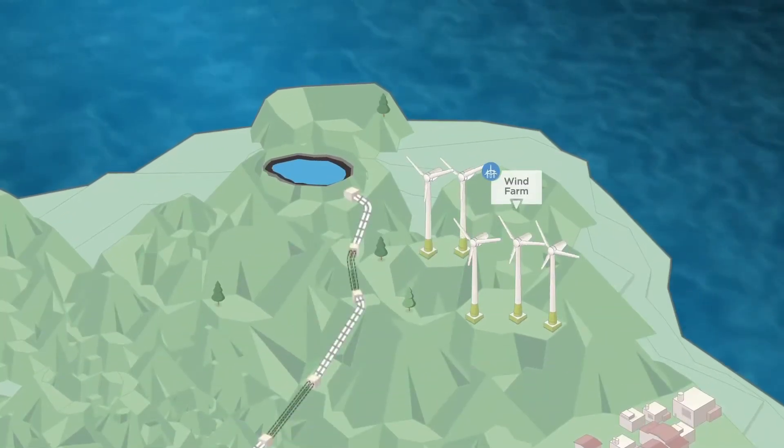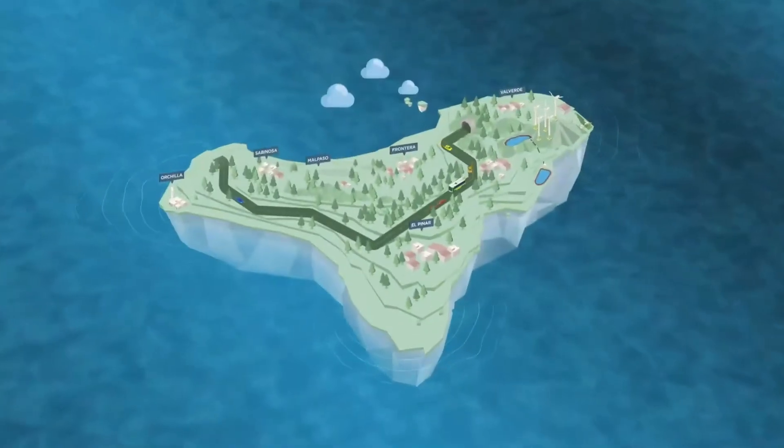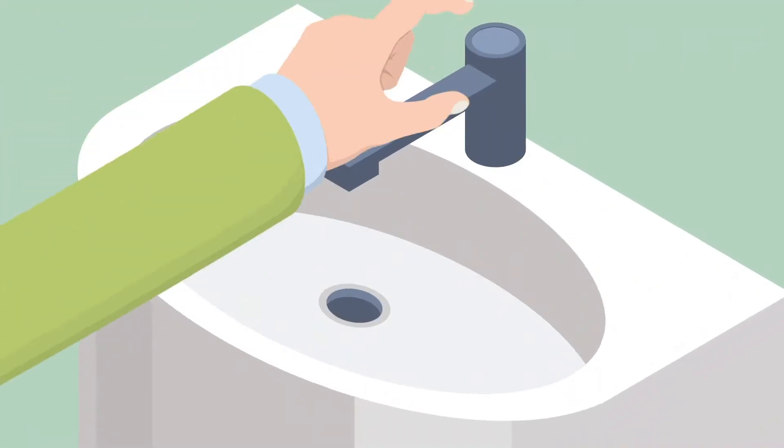The island is capable of supplying electricity with its own resources, reducing the use of fossil fuels to guarantee access to water for human and agricultural consumption.